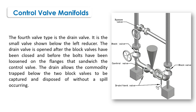The fourth valve type is the drain valve. It is the small valve shown below the left block valve. The drain valve is opened after the block valves have been closed and before the bolts have been loosened on the flanges that give access to the control valve. The drain allows the commodity trapped between the two block valves to be captured and disposed of without a spill occurring.